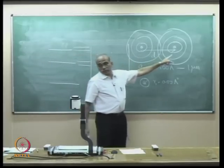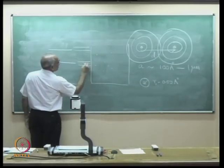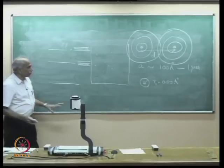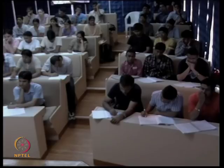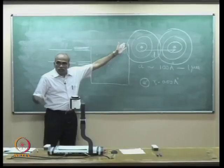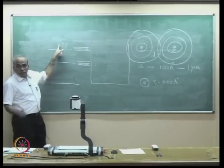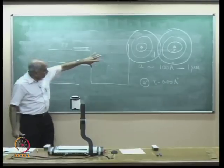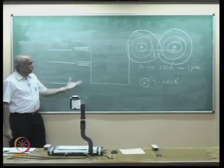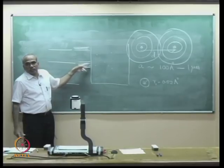This is considering two atoms. If you have a large number of atoms, the levels split into multiple levels. When two atoms are well separated, the entire collection is characterized by discrete energy levels. But if you start bringing them closer, the energy levels get perturbed and splitting of energy levels takes place.